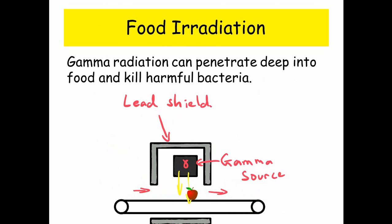Food irradiation: gamma radiation can penetrate deep into food, and it can be used to kill harmful bacteria. How this works is you have a lead shield surrounded by a gamma source, and then your apple or whatever goes through on a conveyor belt and gets irradiated, killing any bacteria. But that does not leave the food in any way radioactive — it's just the radiation has passed through it. Once it's left the box, there's no radiation on the food at all.